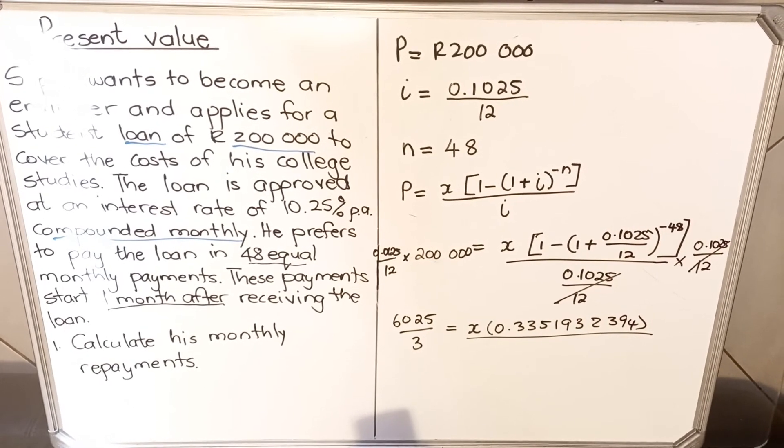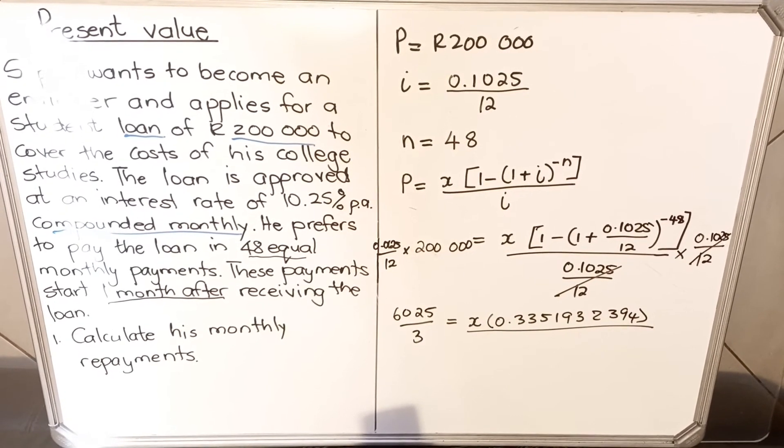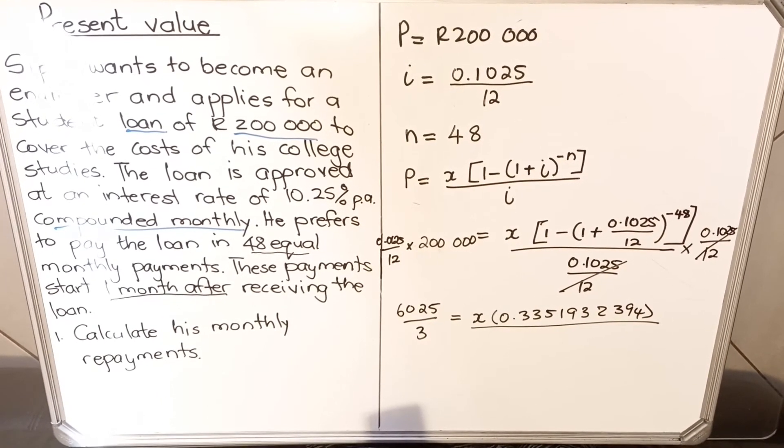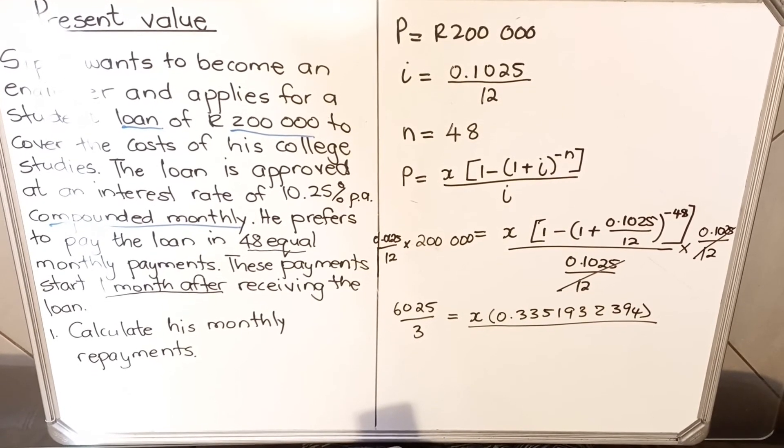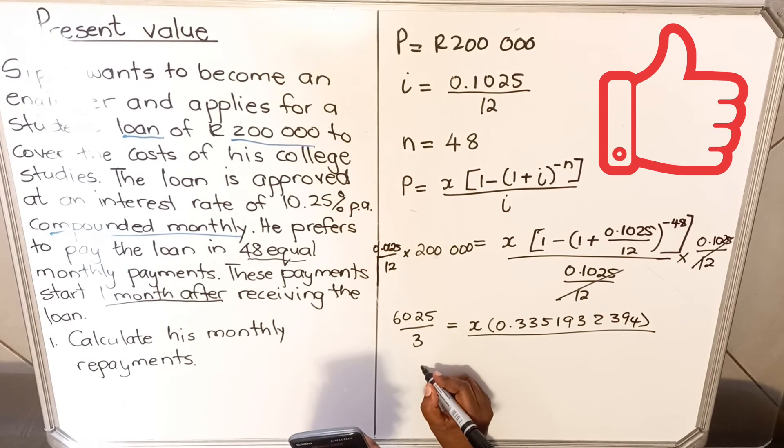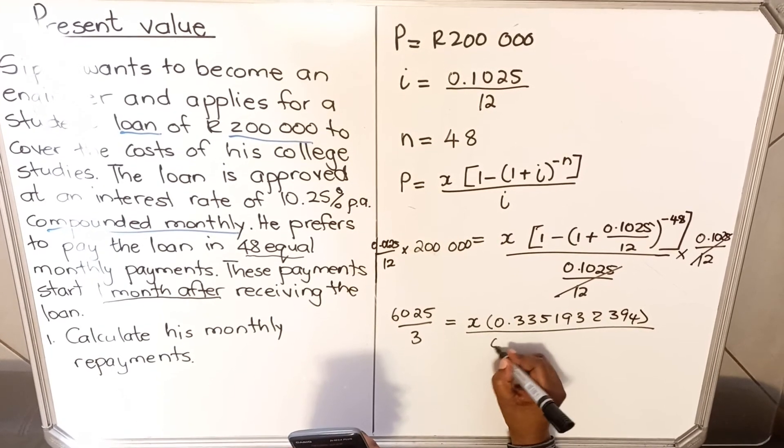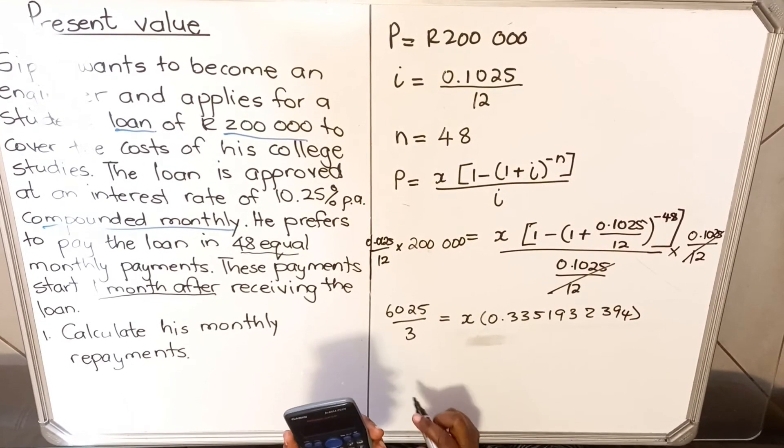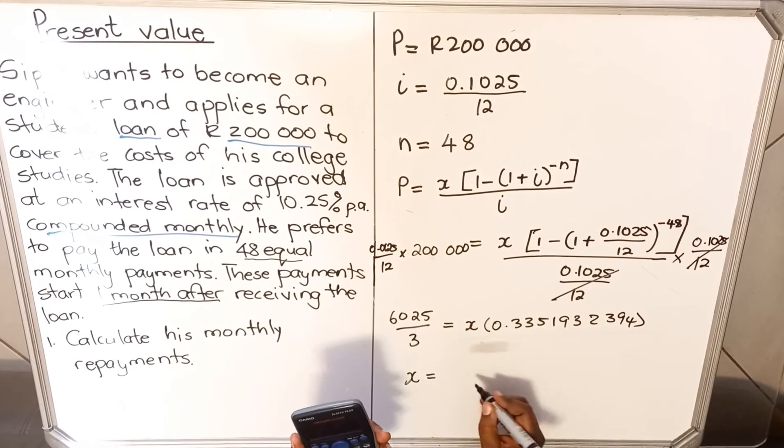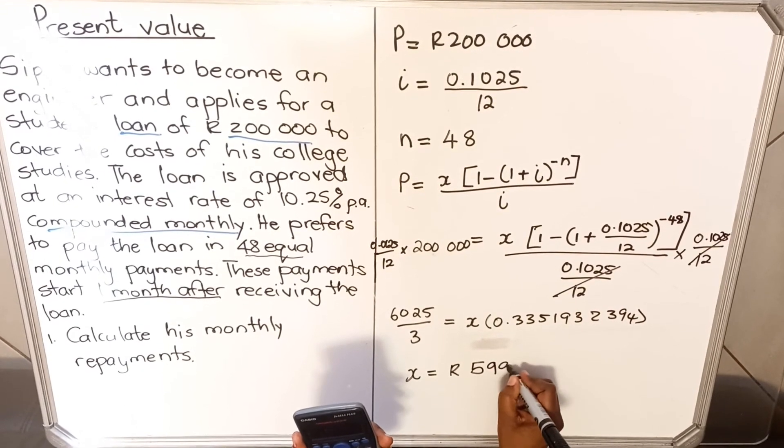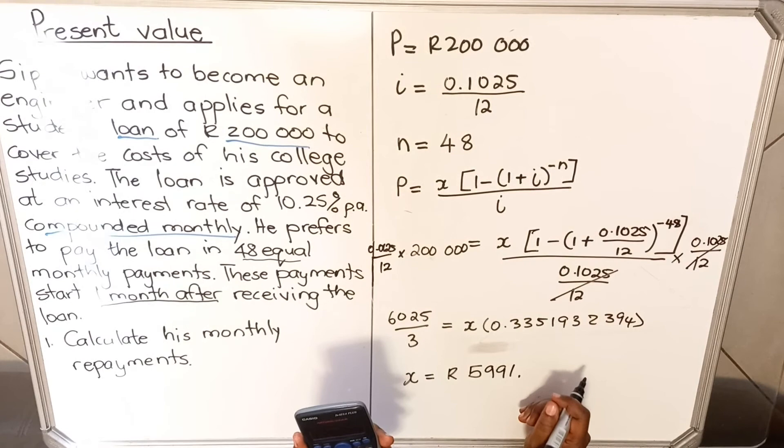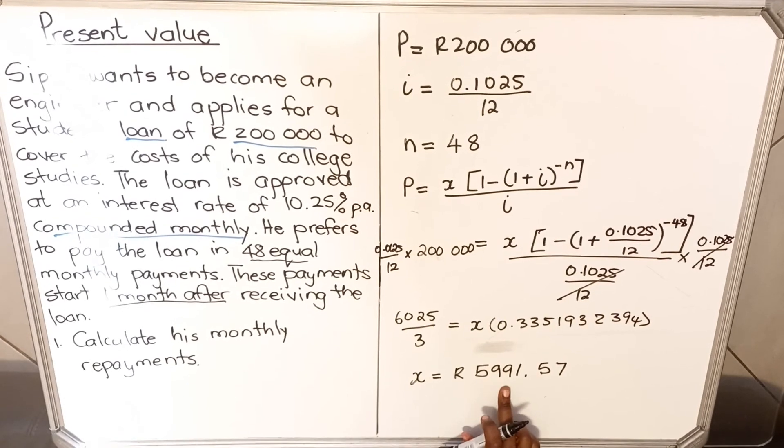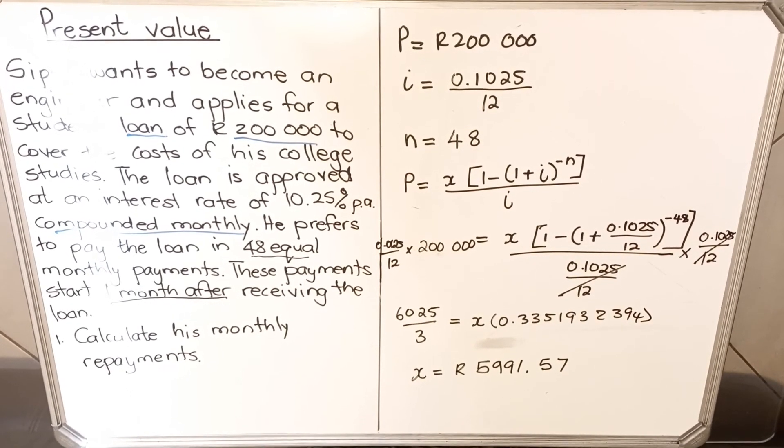You have the number. You have to do the fraction first. 6,025 divided by 3, and then divide by the answer. When you find x, you can get your x to be R5,991.57. You always round off your final answer to the nearest cent. R5,991.57. So he's supposed to pay R5,991.57 for 48 months. This is how we do the present value question.